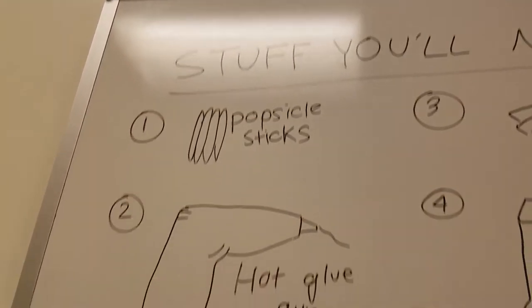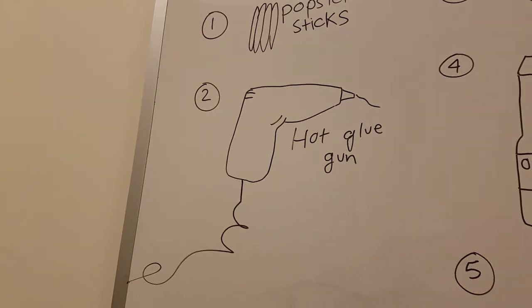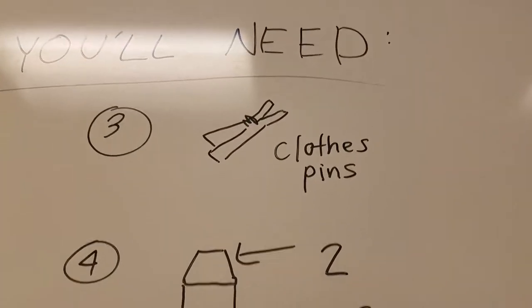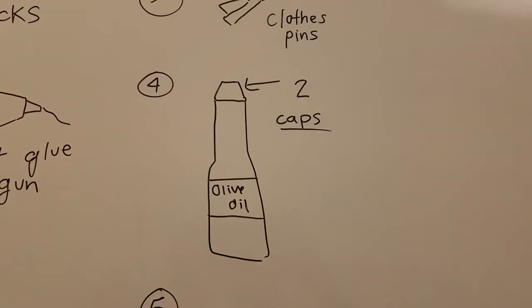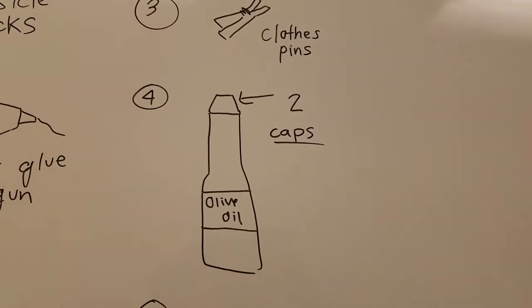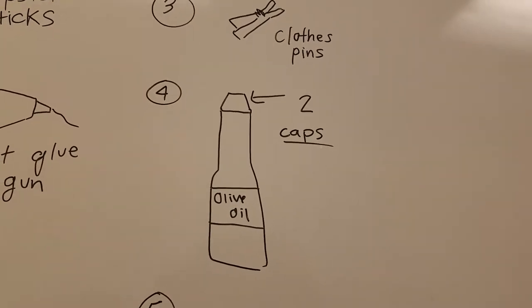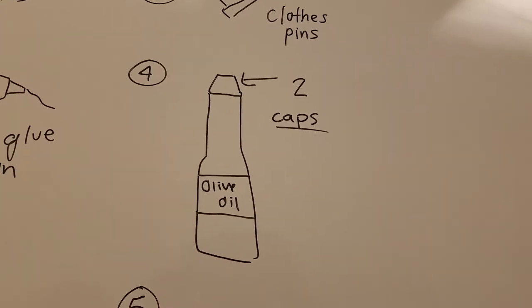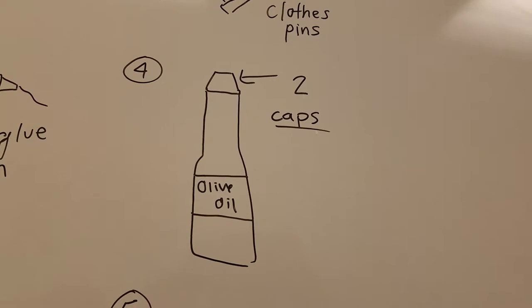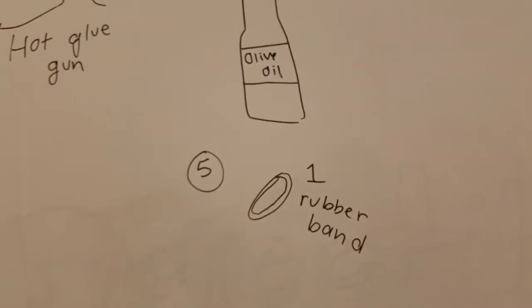Number two, you'll need a hot glue gun and hot glue sticks. Be careful. Number three, you'll need a few clothespins. And number four, you're going to need two caps of the exact same size. You could go out and buy a couple bottles of olive oil or apple cider vinegar or really anything with a small cap that's fairly firm. And number five, you're going to need one rubber band.